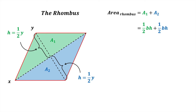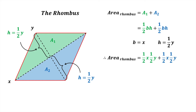For both these triangles, the base is x and the height is half y. Making these substitutions means that the area of the rhombus equals half x times half y plus half x times half y. Using our knowledge of fraction multiplication, these two terms can be simplified to a quarter xy plus a quarter xy. Finally, these two like terms sum together to give the area of the rhombus as half xy.